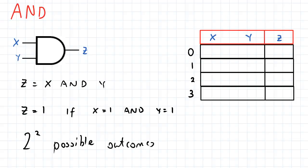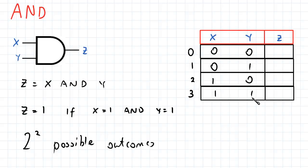In binary, 0 is 00 as a 2-bit number. 1 is 01. 2 is 10. And 3 is 11.